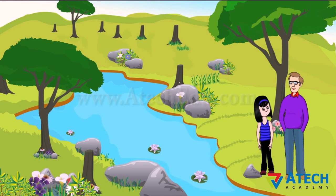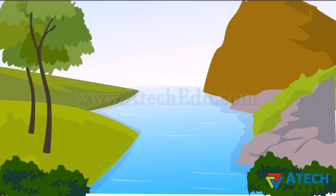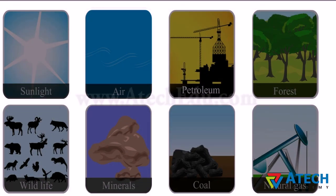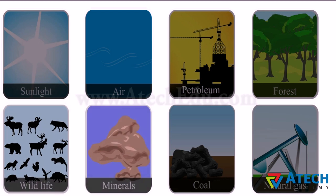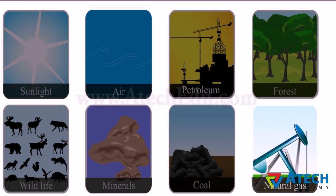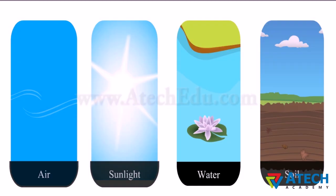Dad, what do you mean by natural resources getting exhausted? Can you explain in detail? Natural means from nature. Nature has given us a lot of resources. Hence, resources supplied by nature will be natural resources. These resources are sunlight, air, petroleum, forest, wildlife, minerals, coal, natural gas, etc.